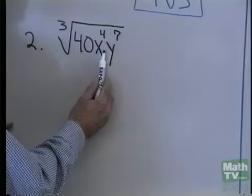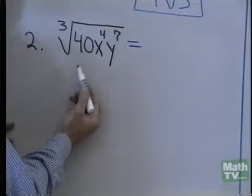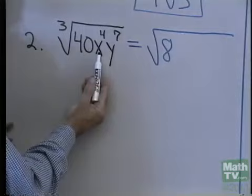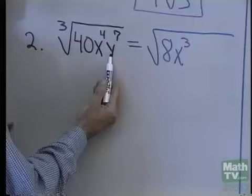Let's simplify the cube root of 40x⁴y⁷, assuming the variables represent positive numbers. I'm looking for the largest perfect cube that divides 40, which will be 8, since 8 times 5 is 40. The largest perfect cube that divides x to the 4th is x cubed. The largest perfect cube that divides y to the 7th is y cubed.